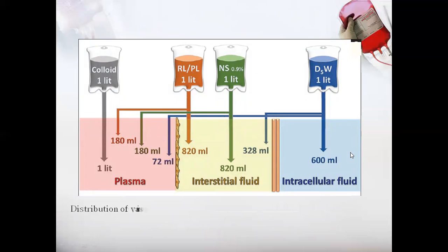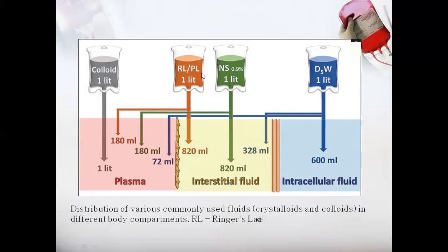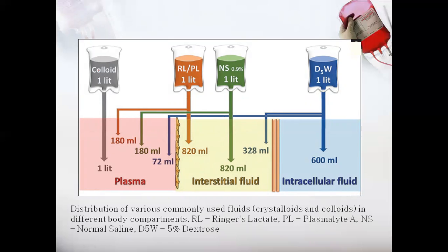This is a diagrammatic representation of how colloids and crystalloids act in the body when given intravenously. Ringer's lactate and normal saline directly enter the interstitial fluid, with a certain amount then entering the plasma while the maximum remains in the interstitial fluid. Dextrose's maximum amount remains intracellular. However, colloidal drugs — 100% of them — directly enter the plasma, making them the drug of choice when there is a serious need to increase plasma volume, such as in circulatory shock.